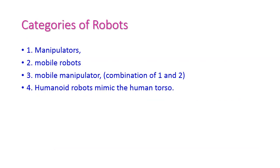There are four categories of robots: manipulators, mobile robots, mobile manipulators — which are a combination of manipulators and mobile robots — and humanoid robots. Humanoid robots are designed to perform actions exactly like the human torso.